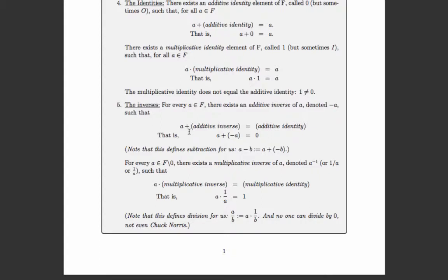So those are the axioms of a field. But is that enough to define the real number line? Is every number that we think of as real generated from — implied by — these axioms?